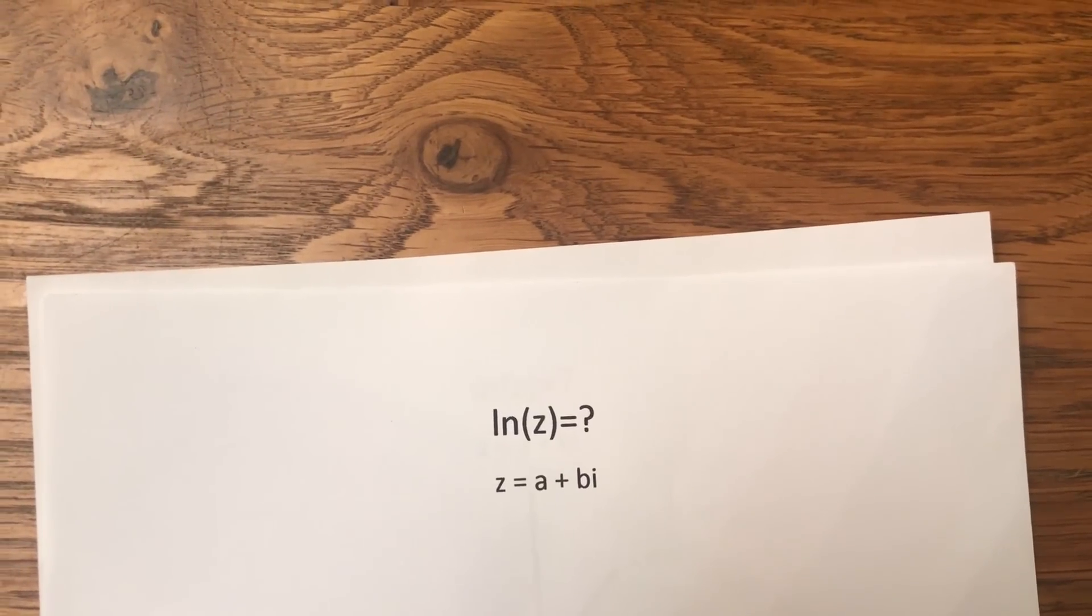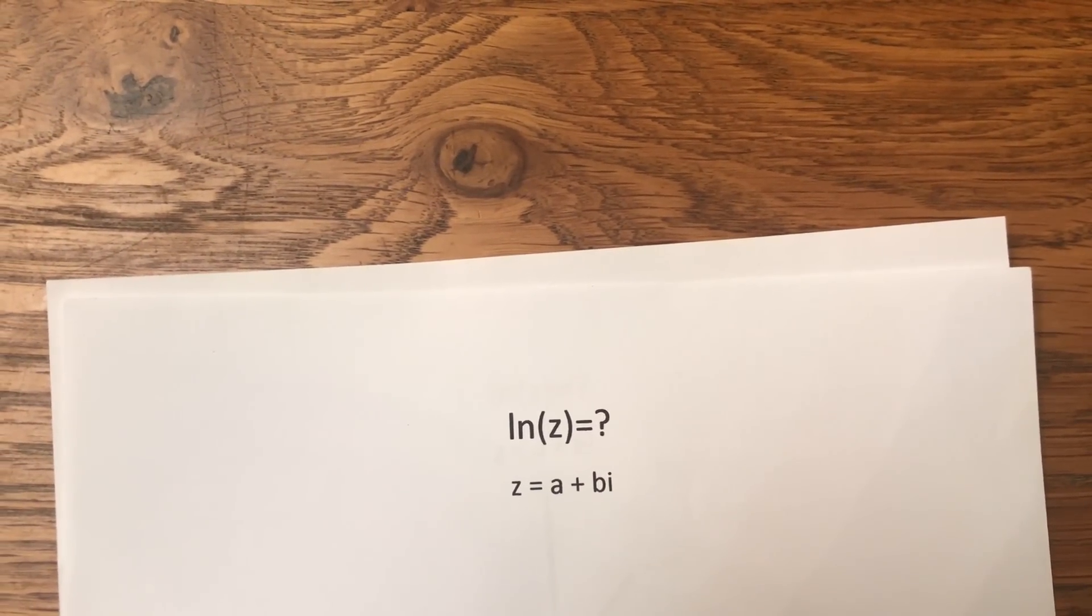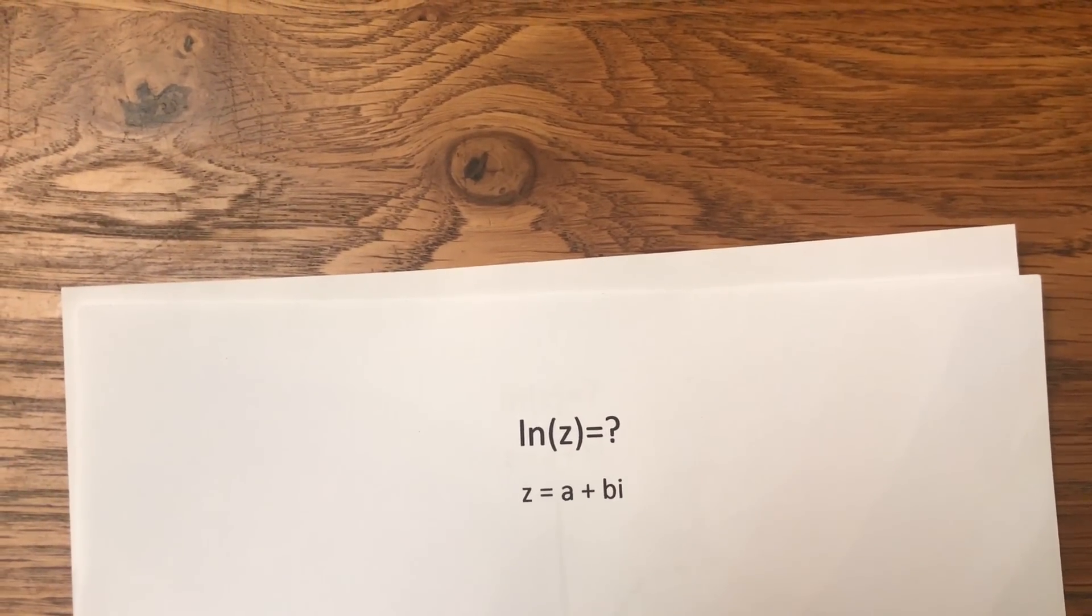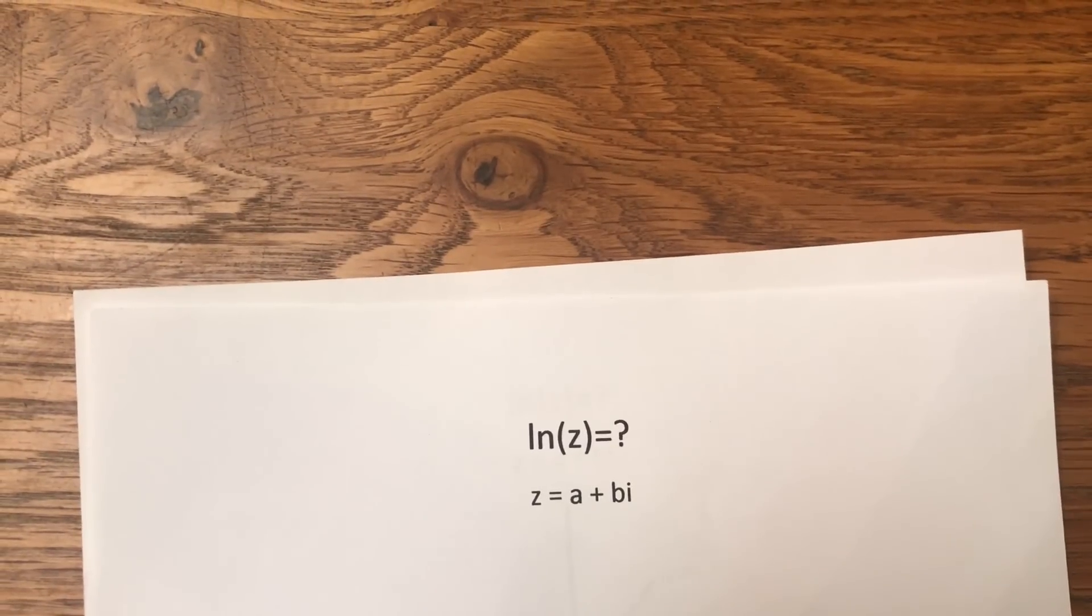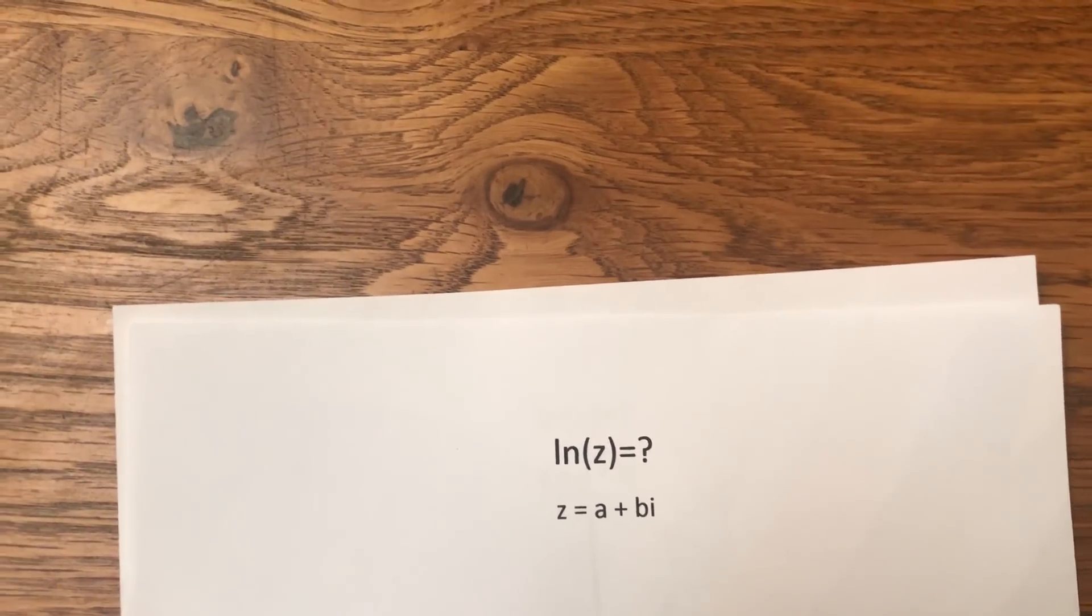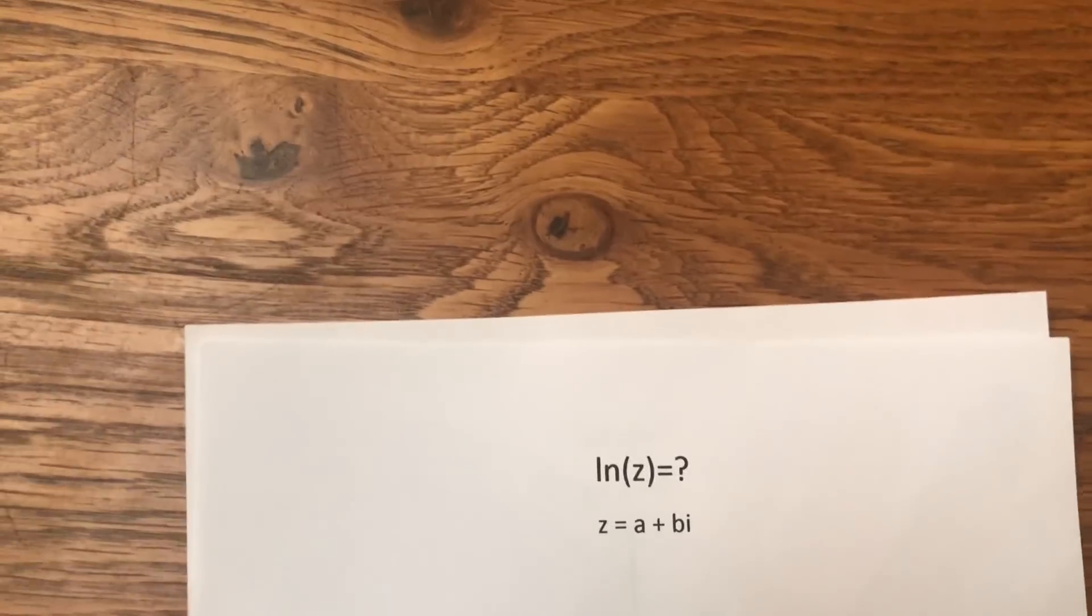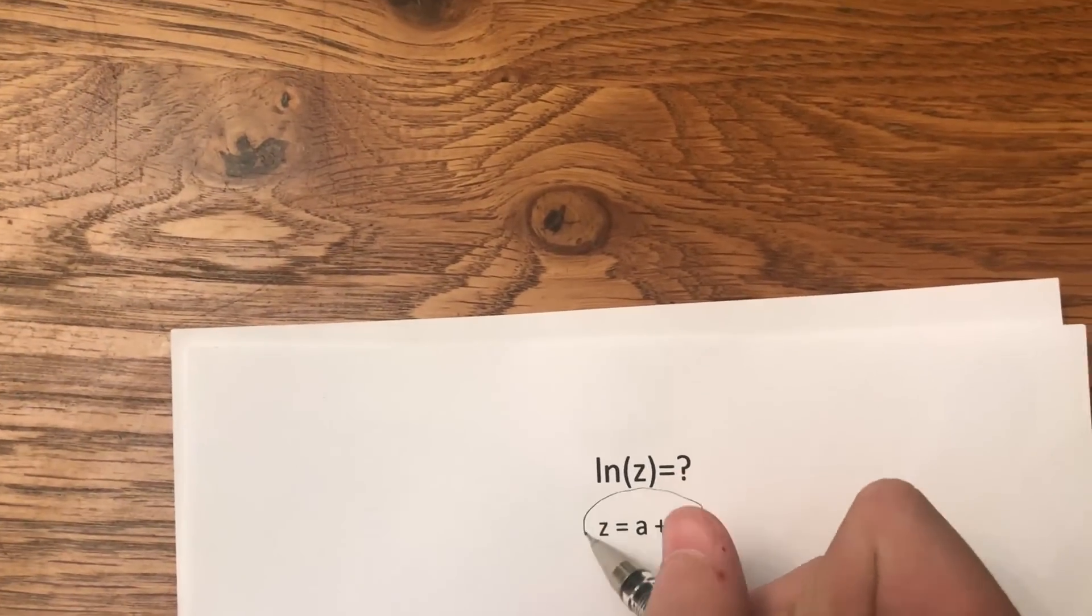Hello everyone and welcome to the flammable math channel. I'm obviously not flammable math, but I'm doing this guest video to let everybody know of my favorite proof: the proof of the complex logarithm, the ln of z for z equals a plus bi.